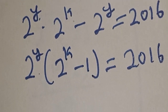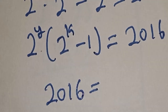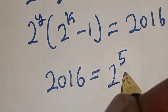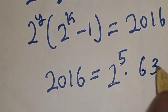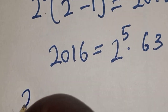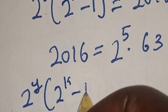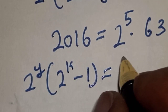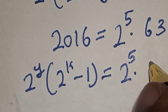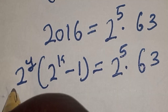Factoring out gives: 2 raised to power Y, multiplied by (2 raised to power K minus 1), is equal to 2016. Now 2016 equals 2 raised to power 5 multiplied by 63. So we have 2 raised to power Y multiplied by (2 raised to power K minus 1) equals 2 raised to power 5 multiplied by 63.